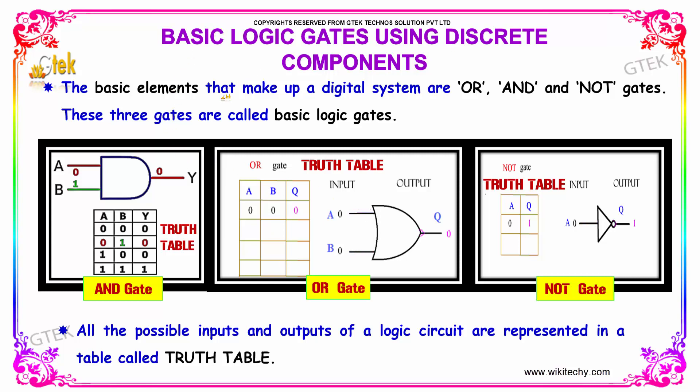The basic elements. We are going to talk about the basic logic gates using discrete components. The basic elements that make up a digital system are the OR gate, AND gate, and finally NOT gate. These three gates are called basic logic gates.